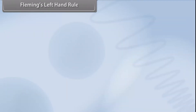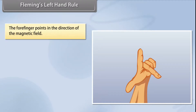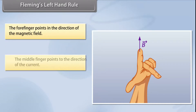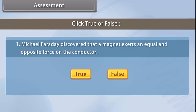Fleming's Left Hand Rule is a mnemonic to represent three directions. You need to stretch your thumb, forefinger, and middle finger of your left hand, each pointing in a specific direction: the forefinger points in the direction of the magnetic field, the middle finger points in the direction of the current, and the thumb points in the direction of motion. Examples include woofers, subwoofers, and electrical actuators.